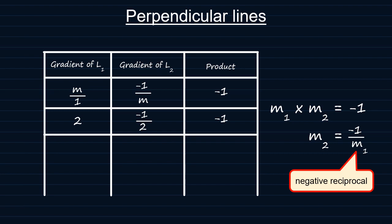What if M has a gradient of minus 3? Then the negative reciprocal should just be a third. And if L1 has a gradient of a quarter, then the gradient of L2 should be minus 4, which is the negative reciprocal. And I think you get the idea.